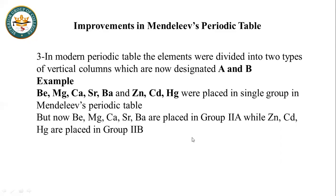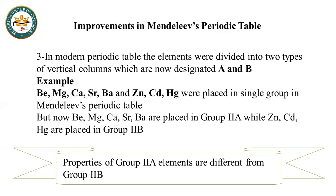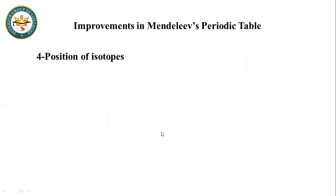This is the third improvement: the properties of Group 2A elements are different from those of Group 2B elements, which led to the concept of A and B subgroups.